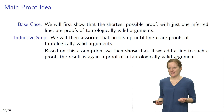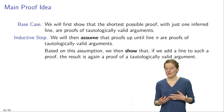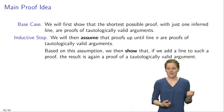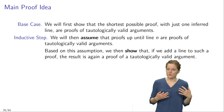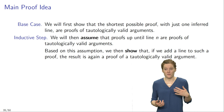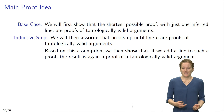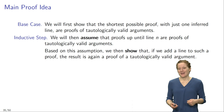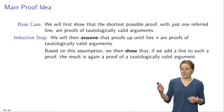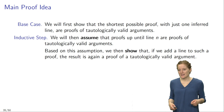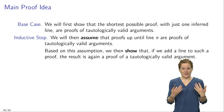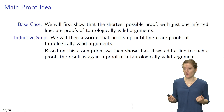Based on this inductive definition of what a TFL proof is, we can now prove that TFL is sound, proceeding in two steps. In the base case, we show that the shortest possible proofs — with just one inferred line — are proofs of tautologically valid arguments. For the inductive step, we assume as our inductive hypothesis that we have proofs of tautologically valid arguments, and show that if we add a line to such a proof, the result is again a proof of a tautologically valid argument. Together, the base case and inductive step entail that every possible TFL proof is a proof of a tautologically valid argument.